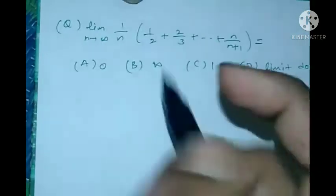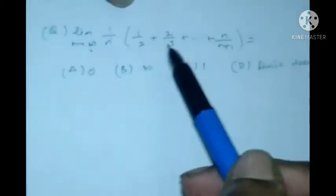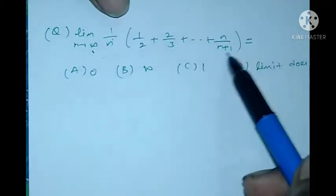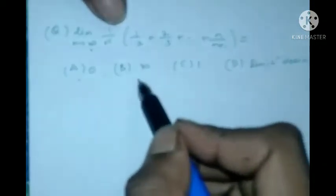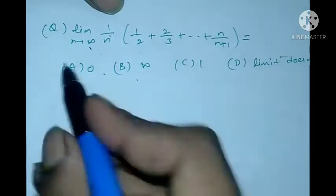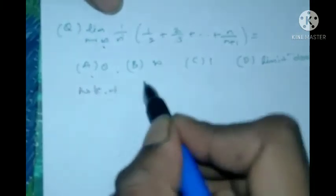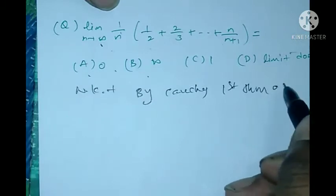This is the third problem: the limit as n tends to infinity of (1/n)(1/2 + 2/3 + ... + n/(n+1)). Option A is 0, option B is infinity, option C is 1, and option D is the limit does not exist. We know that by Cauchy's first theorem on limits.